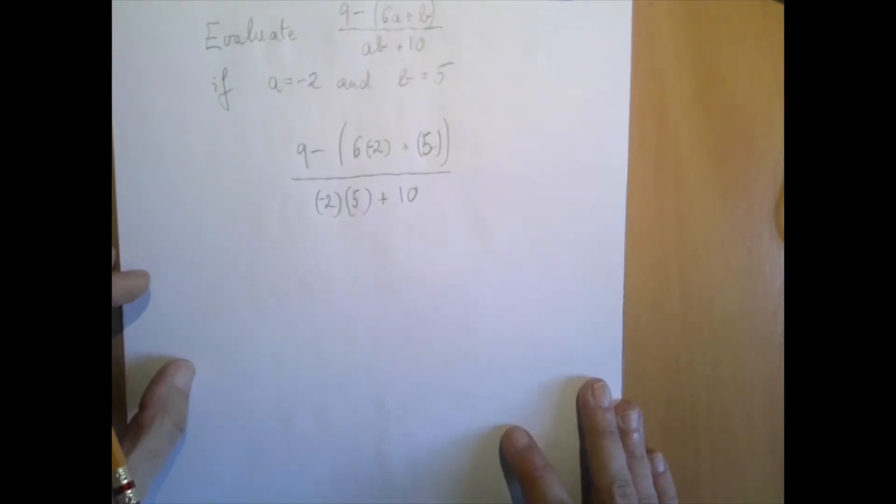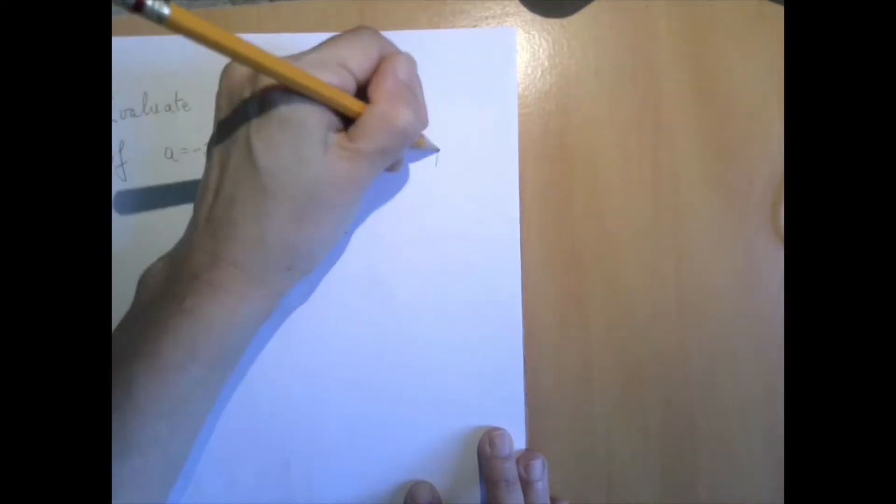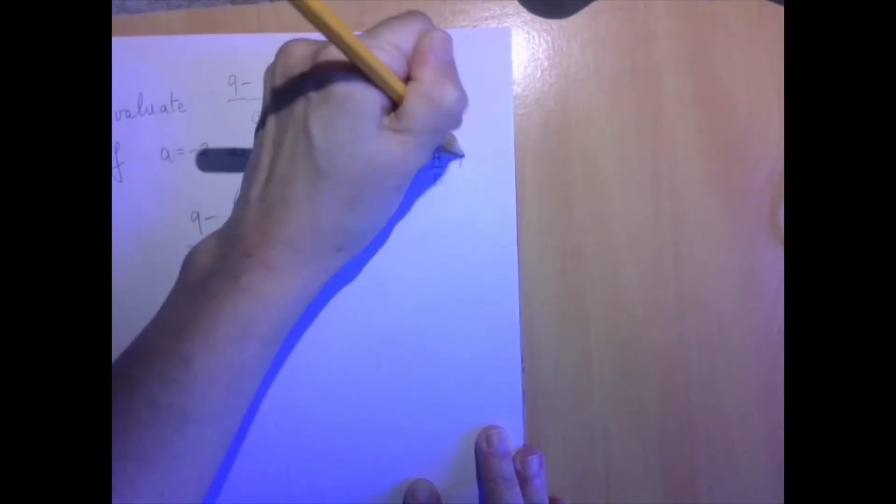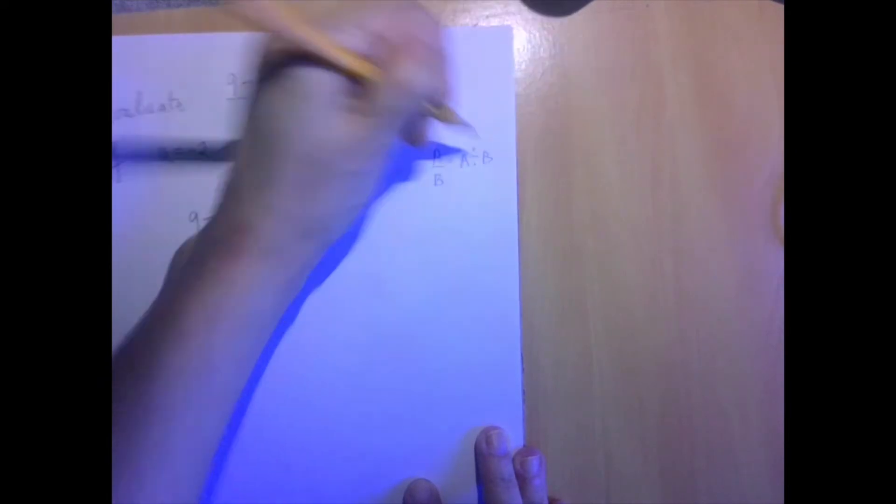So now we have an order of operations problem. If we have something like a over b, we can rewrite it as a divided by b, and then we go left to right.